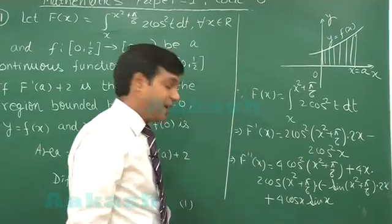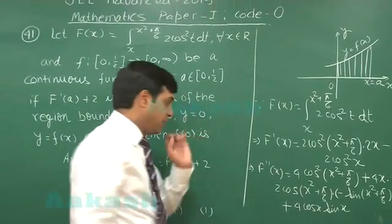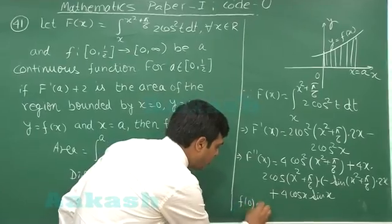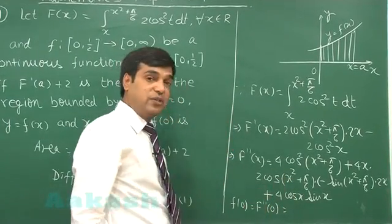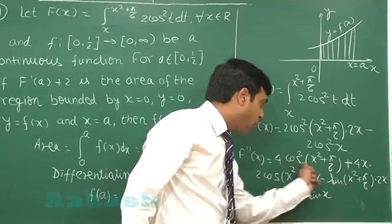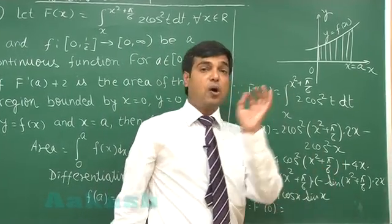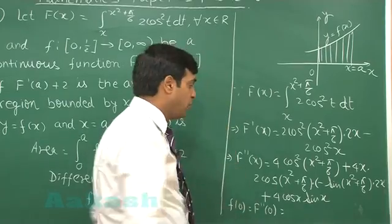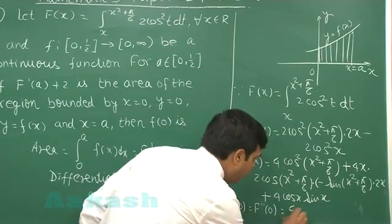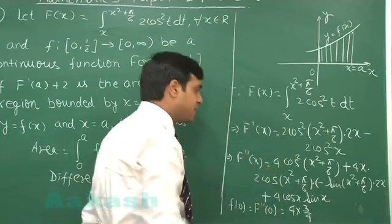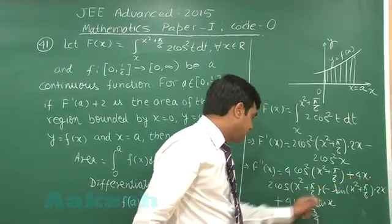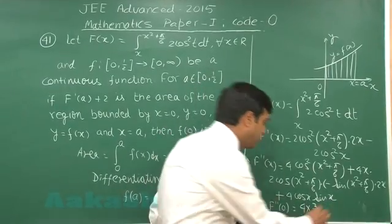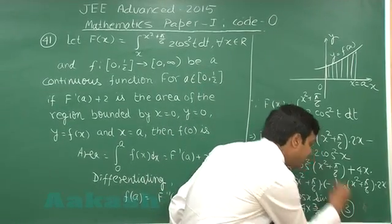My requirement is small f(0). So simply we can say f of 0 is second derivative at 0. On substituting the value 0, we get 4 cos squared pi by 6. Cos pi by 6 is root 3 by 2. So it is 4 into 3 by 4. Rest of the term becomes 0 because x is there, sin x is there. So simply the answer we obtain as 3.